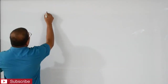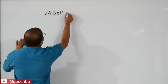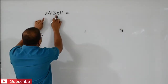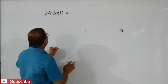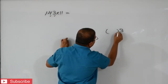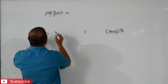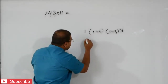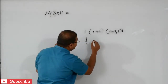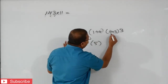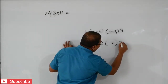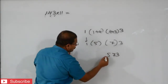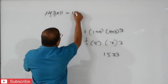Let us see one another number. 143 into 11 equals. First we will write 1, last we will write 3. 143 means 1 and 3 will write first. After that, 4 plus 3 will write here, and then 1 plus 4. Same 1 will write and these two will add. That means 1 plus 4 is 5, and 4 plus 3 is 7, and this 3 will bring down. So our answer is 1, 5, 7, 3.